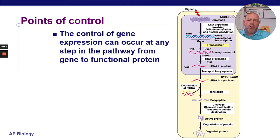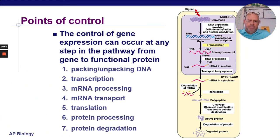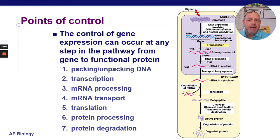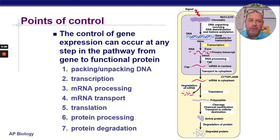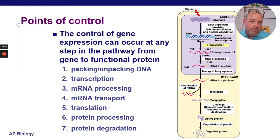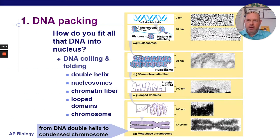There are about seven points of control here that we're going to look at: the packing and unpacking of DNA, transcription, mRNA processing, mRNA transport, translation, and protein processing and protein degradation. We've talked about a lot of these already. Some of them I'll just be able to say we talked about that, others we haven't really talked about and we'll go through them in a little bit more detail.